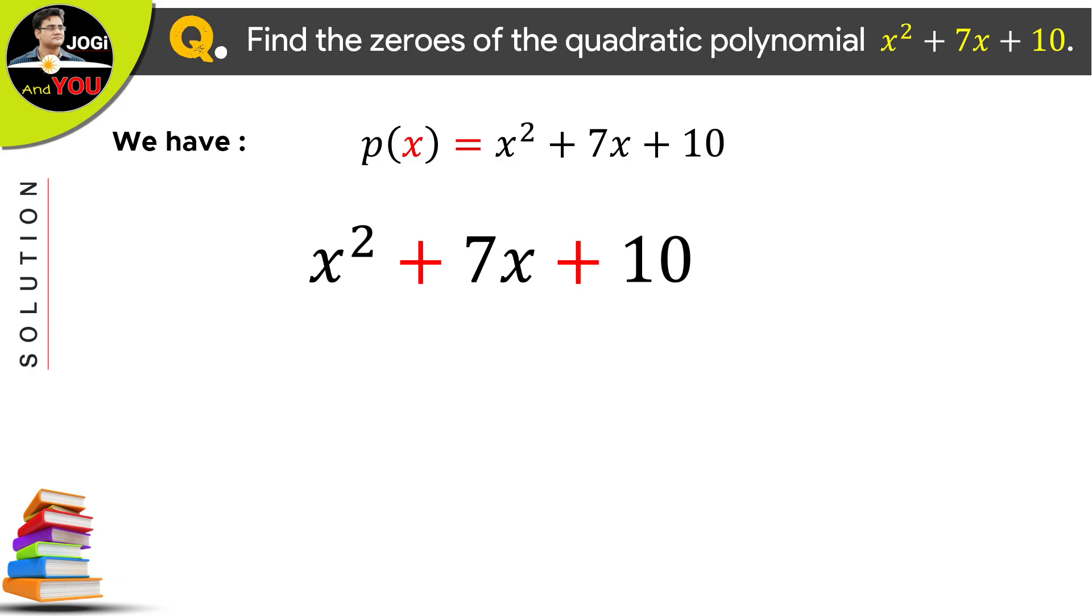And now, in general, there are so many ways to solve a quadratic polynomial. One of them is the factorization method. And the method we will use to find its factors is split the middle term.